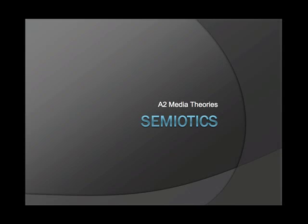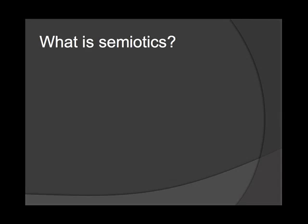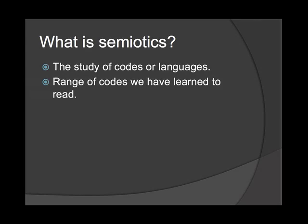A2 media theories: semiotics. Semiotics is the study of codes or languages and the signs from which they are made, and this can include the written and spoken word. There are a range of codes which we've learned to read. For example, when we see a character shaking their head, we know they mean no.